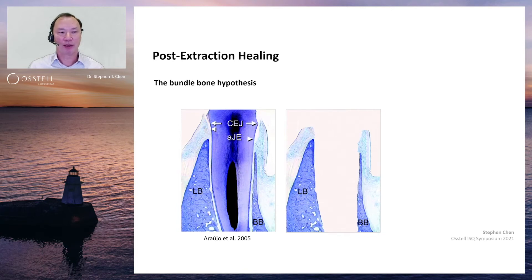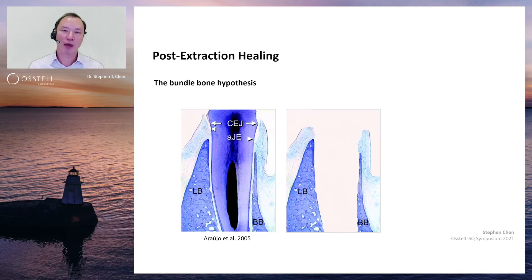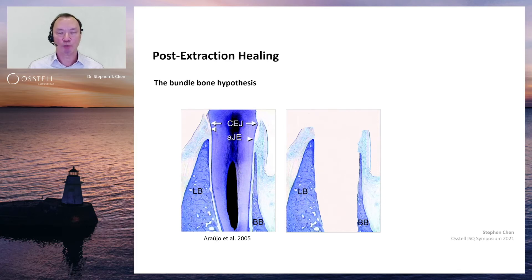This may be explained by the so-called bundle bone hypothesis that was put forward by Maurizio Arruzzo back in 2005. The explanation is that when a tooth is supported within the bone through the periodontal ligament, the periodontal ligament connects with the bone surrounding the socket into specialized cortical bone, which has been referred to as bundle bone. And when the tooth is extracted, the bundle bone, which supports the tooth, no longer has a reason to be present.